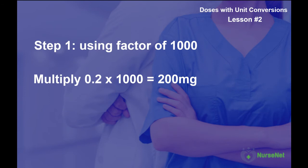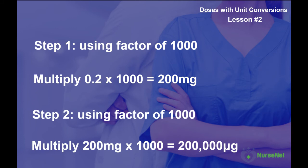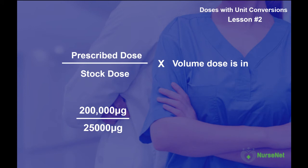Step one: using a factor of 1,000, multiply 0.2 grams by 1,000 to give us 200 milligrams. Step two: using a factor of 1,000 again, multiply 200 milligrams by 1,000 to give us 200,000 micrograms. Now we can do our calculation: 200,000 micrograms divided by 25,000 micrograms gives us 8. 8 multiplied by 100 millilitres gives us 800 millilitres. Therefore our answer is 800 millilitres.